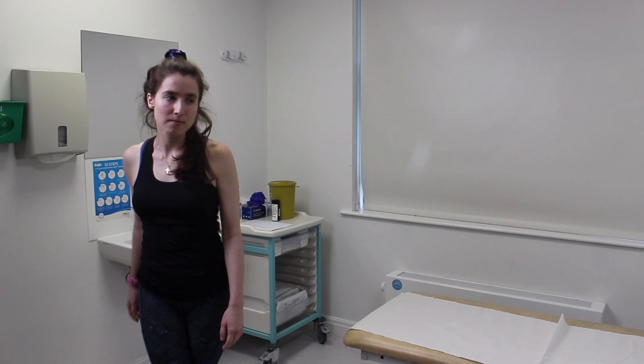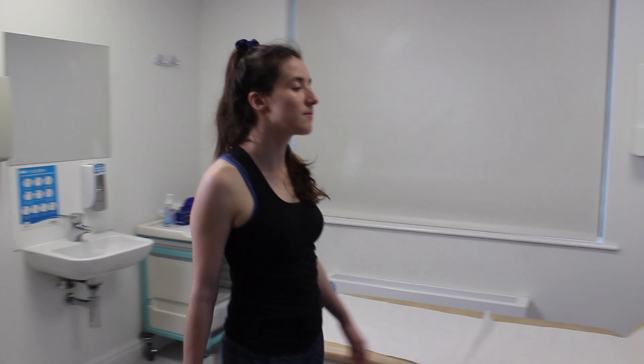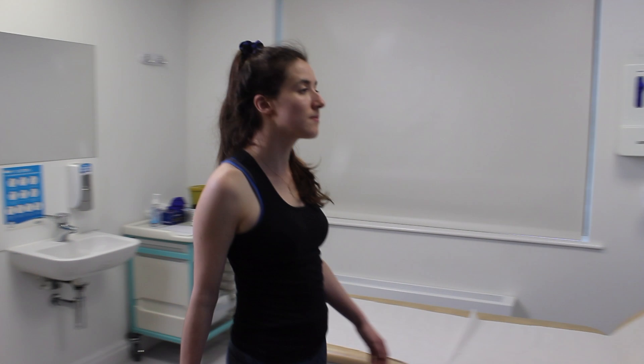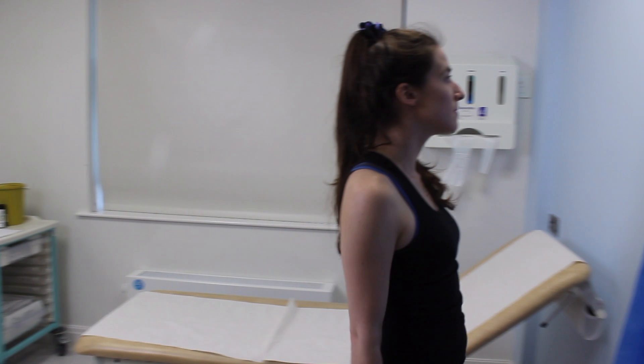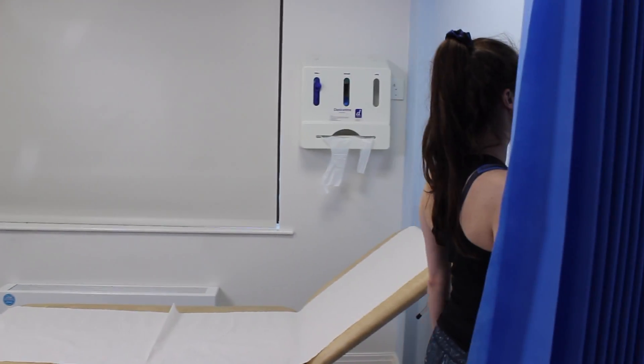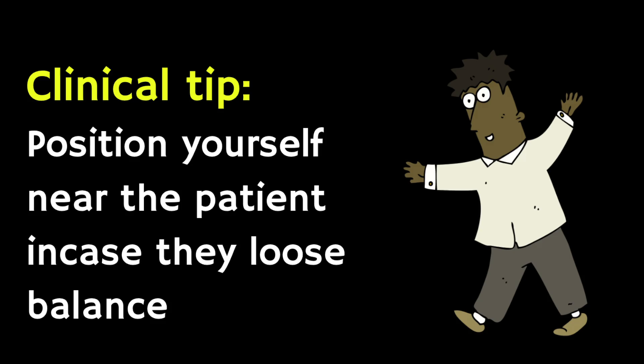You should try to ensure that you see the patient turning, because often in cerebellar disease, turning around is challenging. If you suspect a cerebellar problem, try to make sure that you're positioned near to the patient in case they lose their balance.